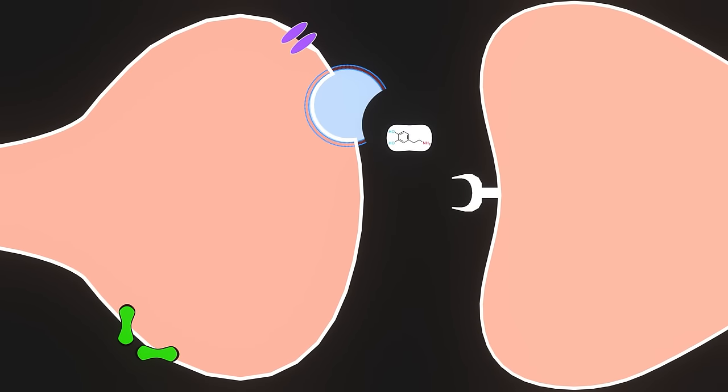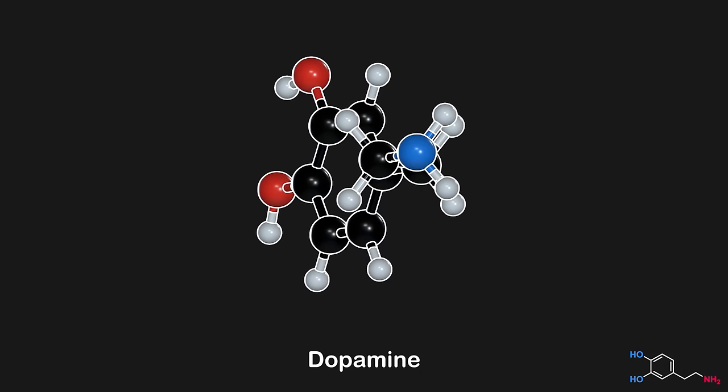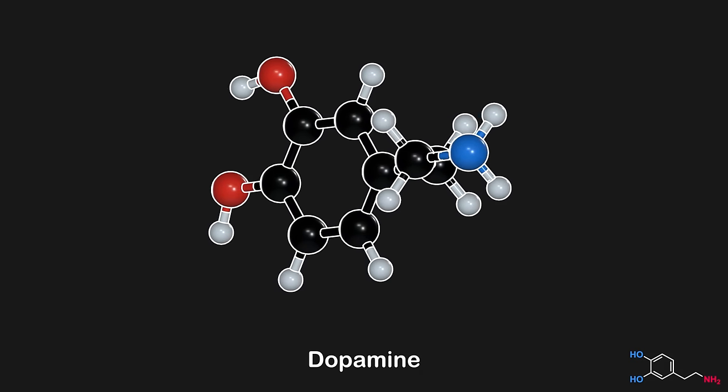After dopamine leaves the presynaptic neuron in a process called exocytosis, dopamine will bind to one of the dopamine receptors, which are often referred to as D1 to D5 for convenience. The dopamine receptors are present on the postsynaptic neuron, so this is where the dopamine is going to bind. If you're interested in what the function of each of the dopamine receptors is, I'll provide a brief summary here.